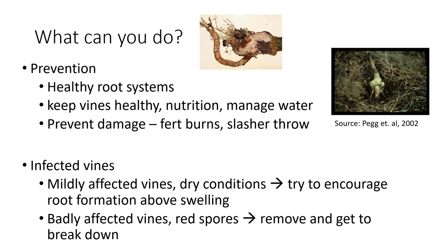For infected vines, if you have mildly affected vines which have a swelling low at the base but which are not collapsing, you may want to try mulching around the base to encourage new root development above the swelling. However, this may not be worth your time and money if it's going to be very wet. Where you have badly affected vines, you're best to get them cut out as soon as possible, particularly before any red spores form on them.